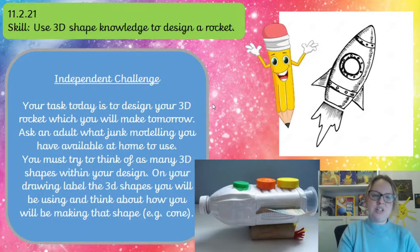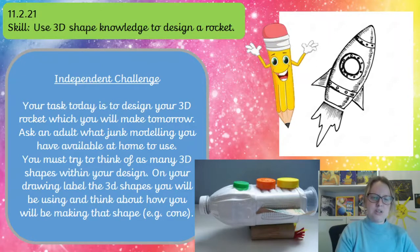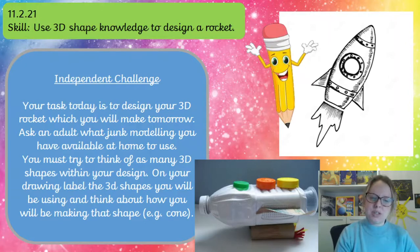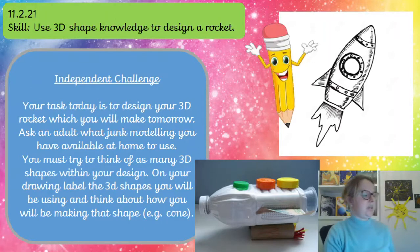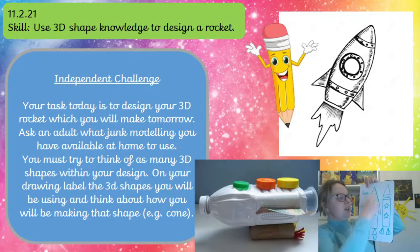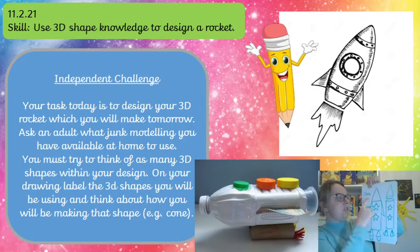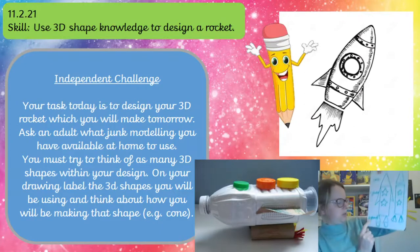So your independent challenge today is to design your 3D rocket, which you will make tomorrow. You need to ask an adult what junk modelling you have available at home to use, and you must try to think of as many 3D shapes within your design. On your drawing, I'd like you to label the 3D shapes that you'll be using and think about how you'll be making that shape — for example, the cone that we just talked about. Here's a simple way to do your design: you could draw it as 2D shapes, but then think about how you're going to make those into 3D shapes, and then label it — cone, cylinder, pyramid.